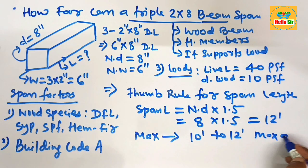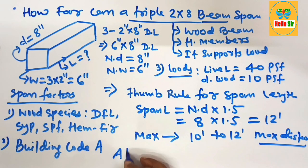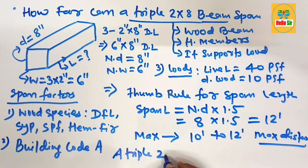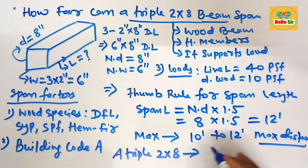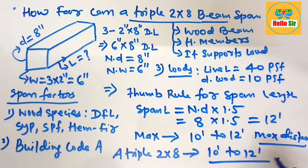If your question is what is the span length for a triple ply 2x8 beam, it can span about 10 to 12 feet. Thank you.